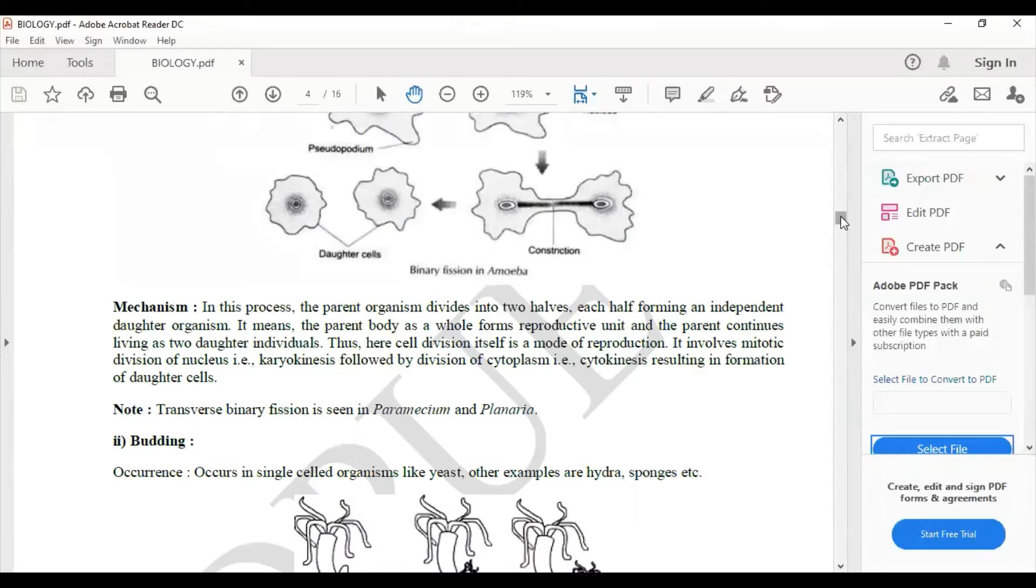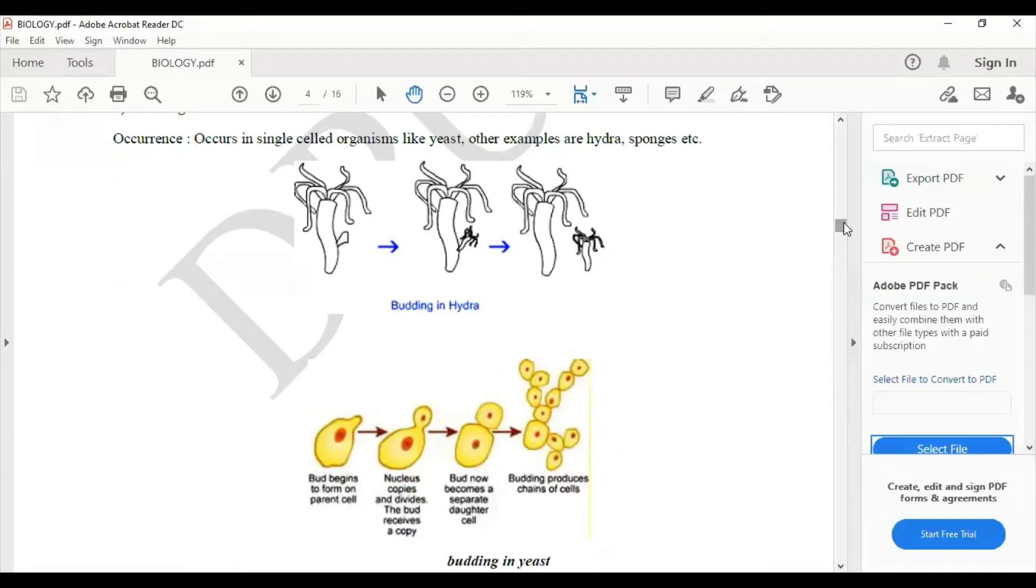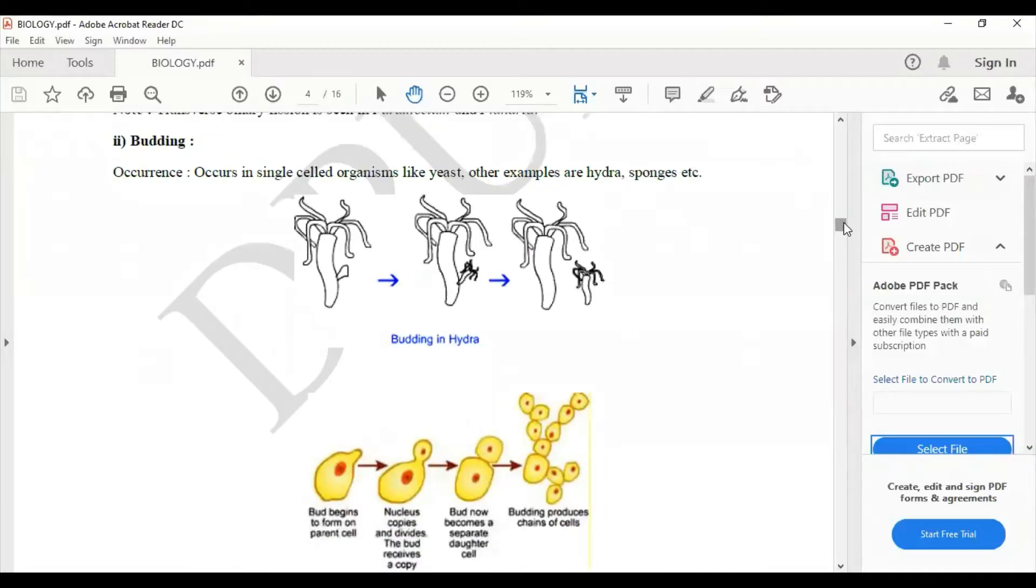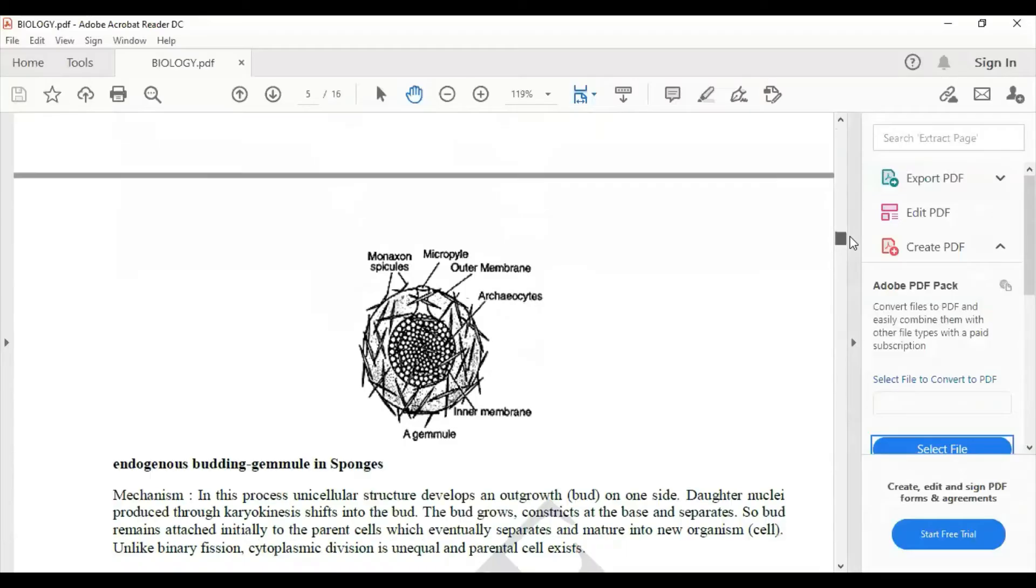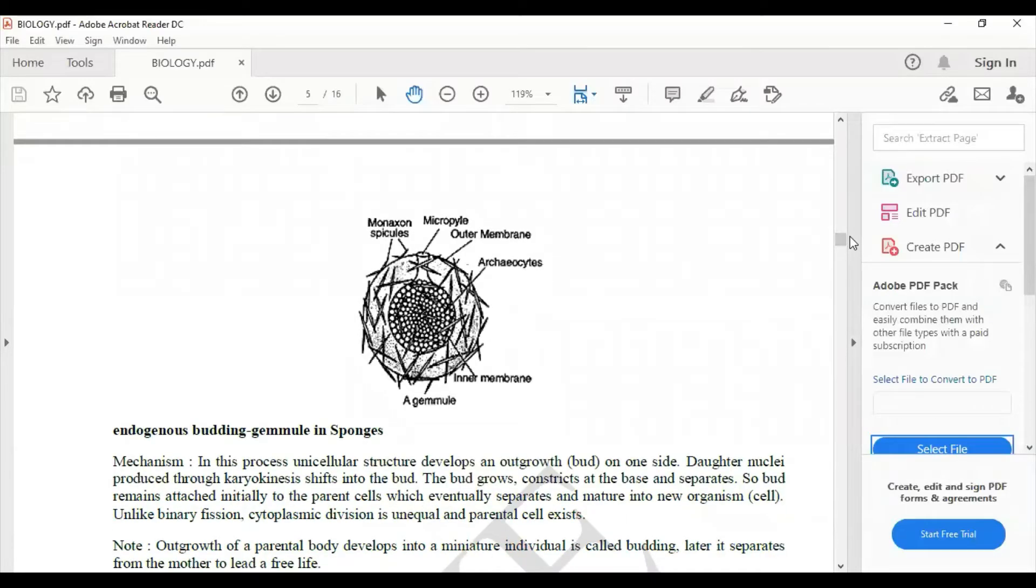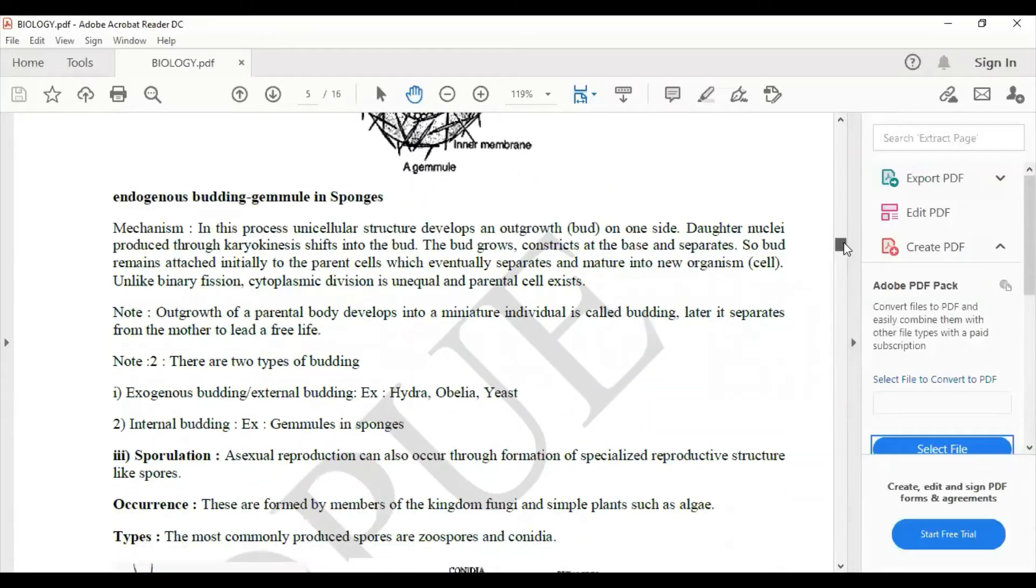Then it will explain budding with diagram, that is an example of hydra and yeast. Moving on, it will talk about gemmule too, so the gemmule mechanism is here.